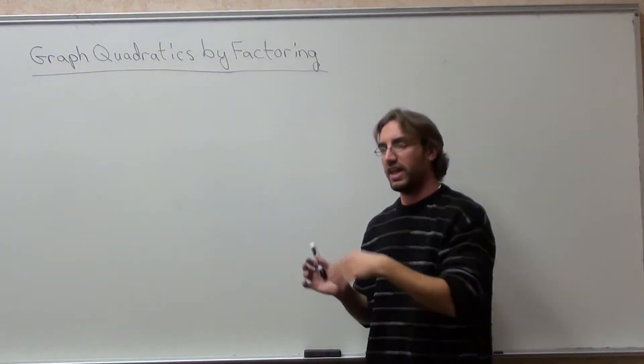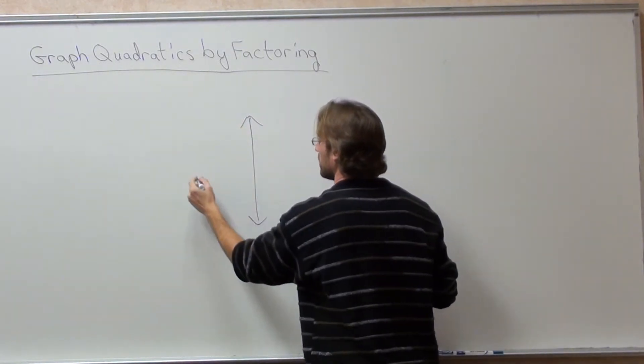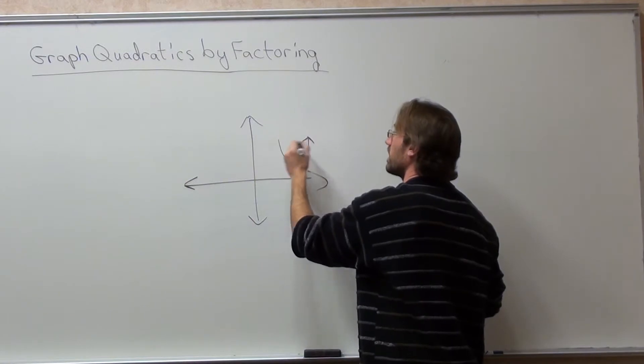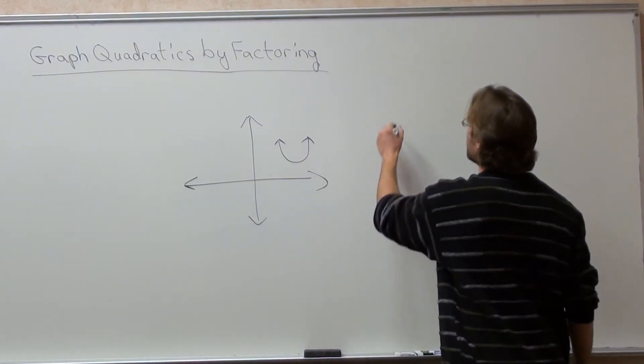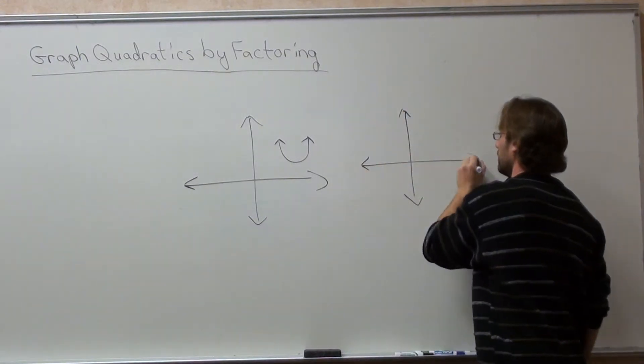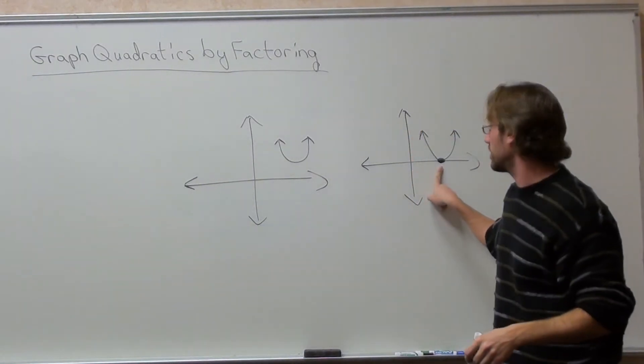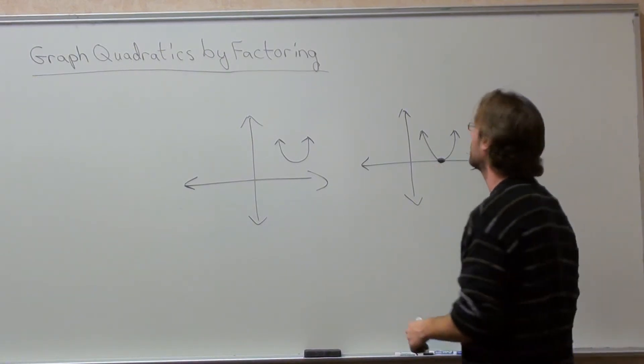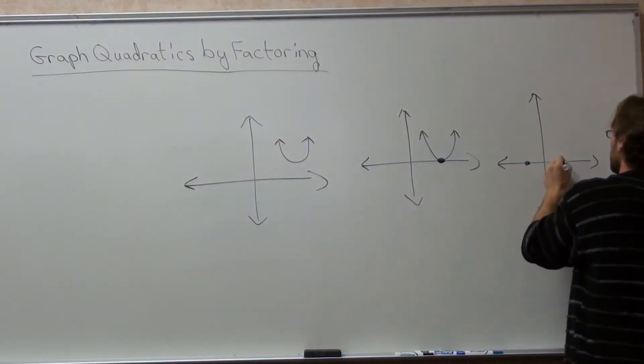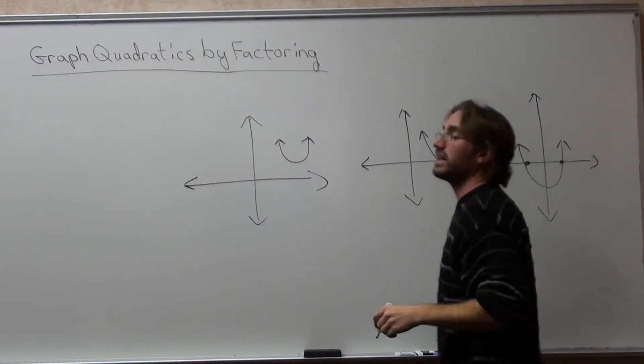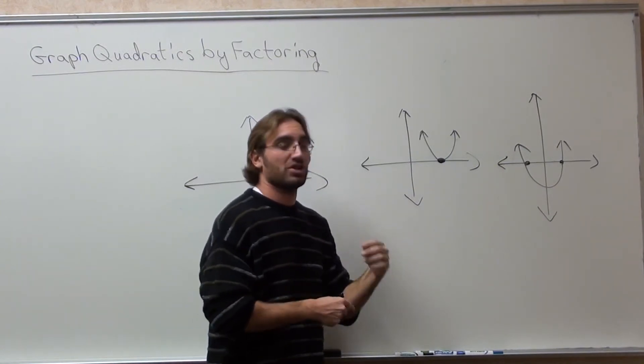When you're graphing quadratic functions, and they can go either up or down, and I'm going to have all my examples go up in this particular example. I can have a quadratic function that looks like this, which means it never hits the x-axis, which means it has no solutions. I can have a quadratic function that hits the x-axis once, which means it has one solution. And I can have a quadratic function that hits the x-axis twice, which has two solutions. So these are the types of functions we're working with.